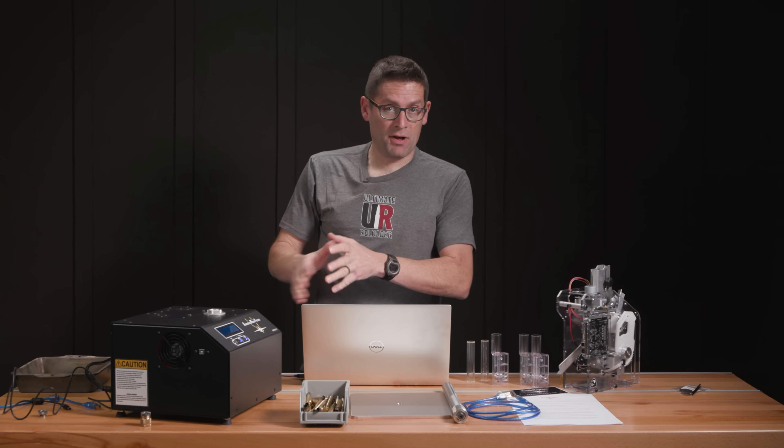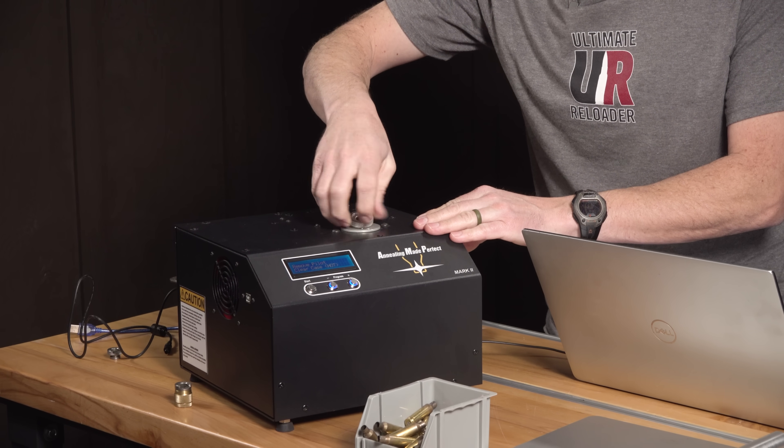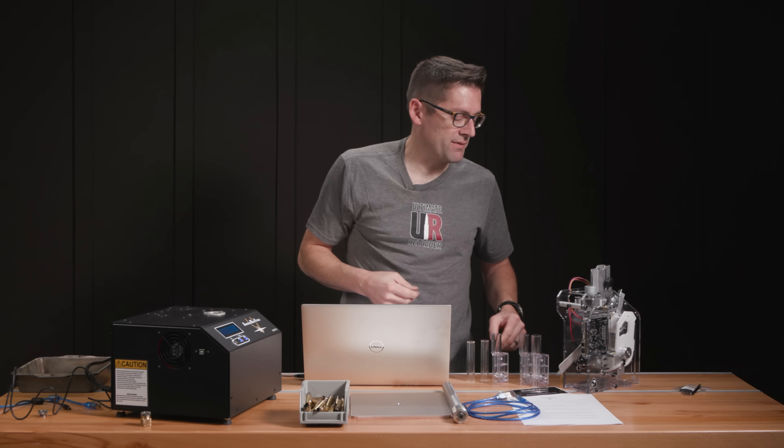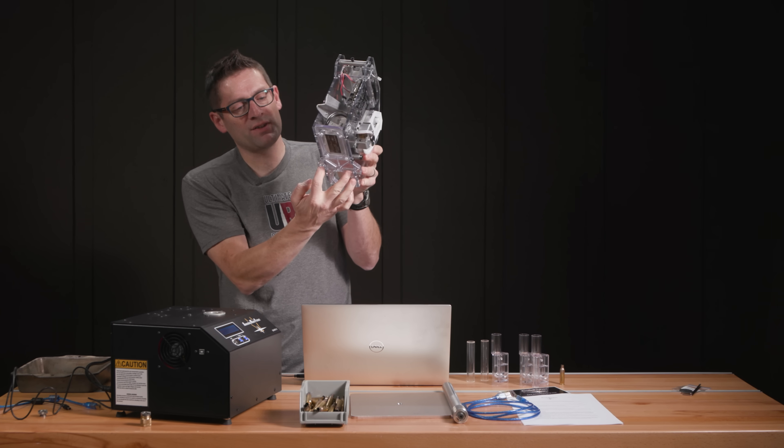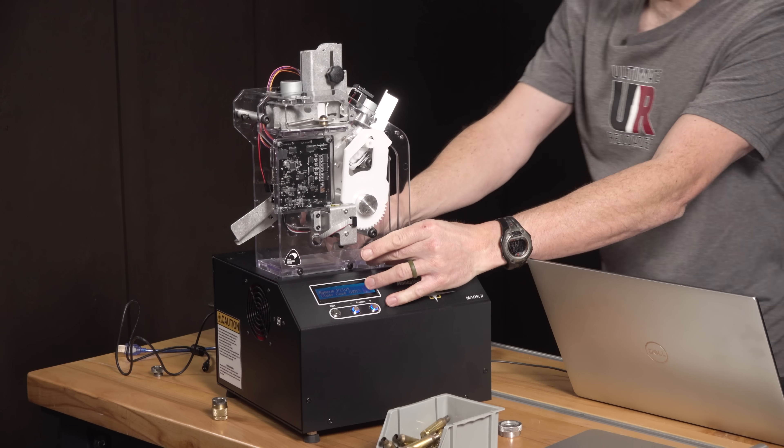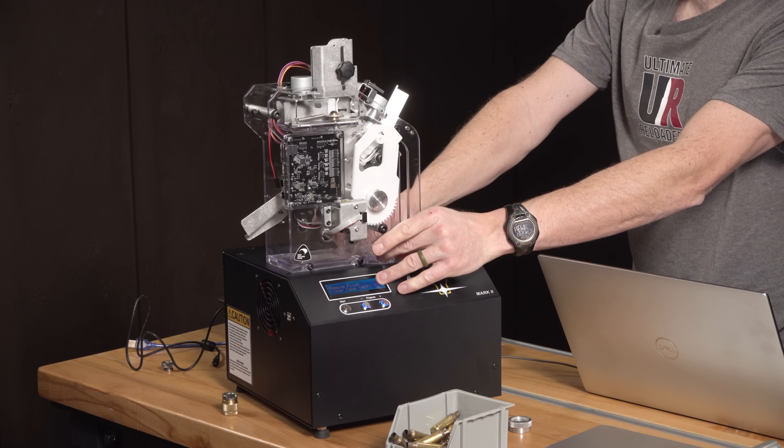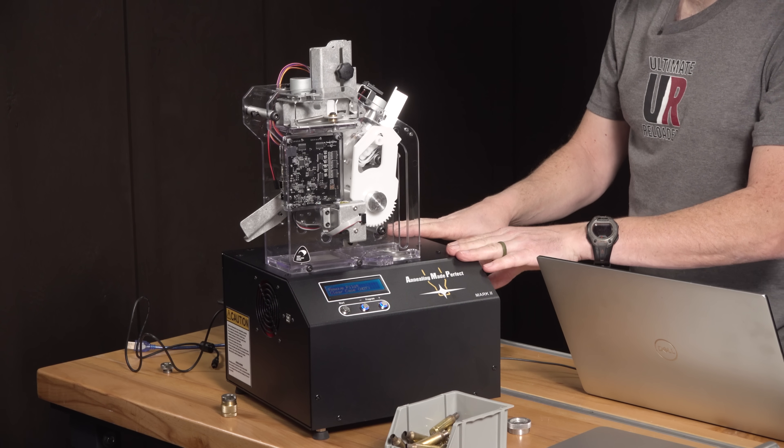So the Amp Mark II is plugged in and powered on. I'm going to remove the pilot. This is our number 17 pilot for 6.5 Creedmoor for this portion of the setup. Now you notice these depressions on the bottom. These are going to locate right on the tops of these dome screws. And that's going to orient the AmpMate on top of the Amp Mark II.